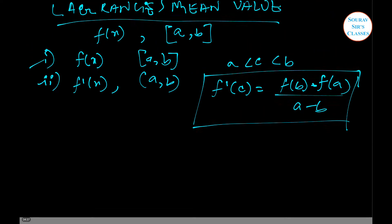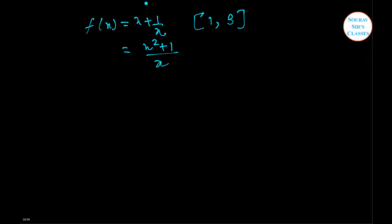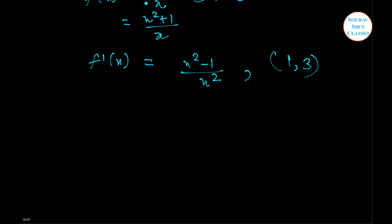Now we are going to show you with an illustration. Let us consider the function f(x) equal to x plus 1 by x, which lies in the closed interval 1 and 3. As this is a rational function, it is very clear that this is continuous in this closed interval. Also we are going to find f'(x) as x squared minus 1 by x squared, which is also continuous in the open interval of 1 and 3.